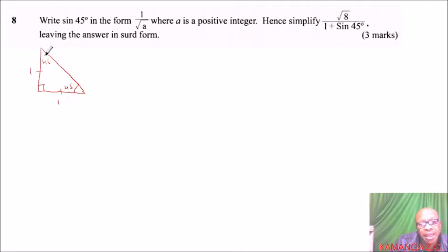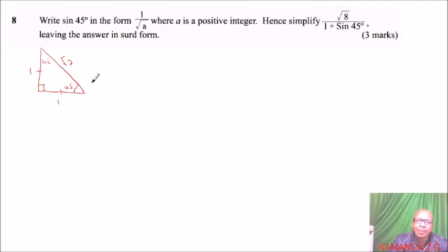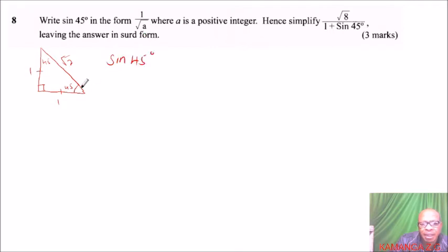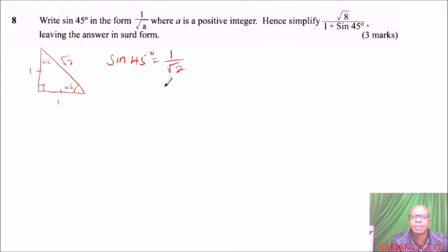By the Pythagorean theorem, this side here is root 2. That is, the hypotenuse is equal to the square root of 1 squared plus 1 squared. 1 squared is 1, so 1 plus 1 is 2, giving the square root of 2. With that, we can say sine of angle 45 — sine is opposite over hypotenuse — so it is 1 over root 2. We have managed to express sine 45 in this format, because our a here is 2.